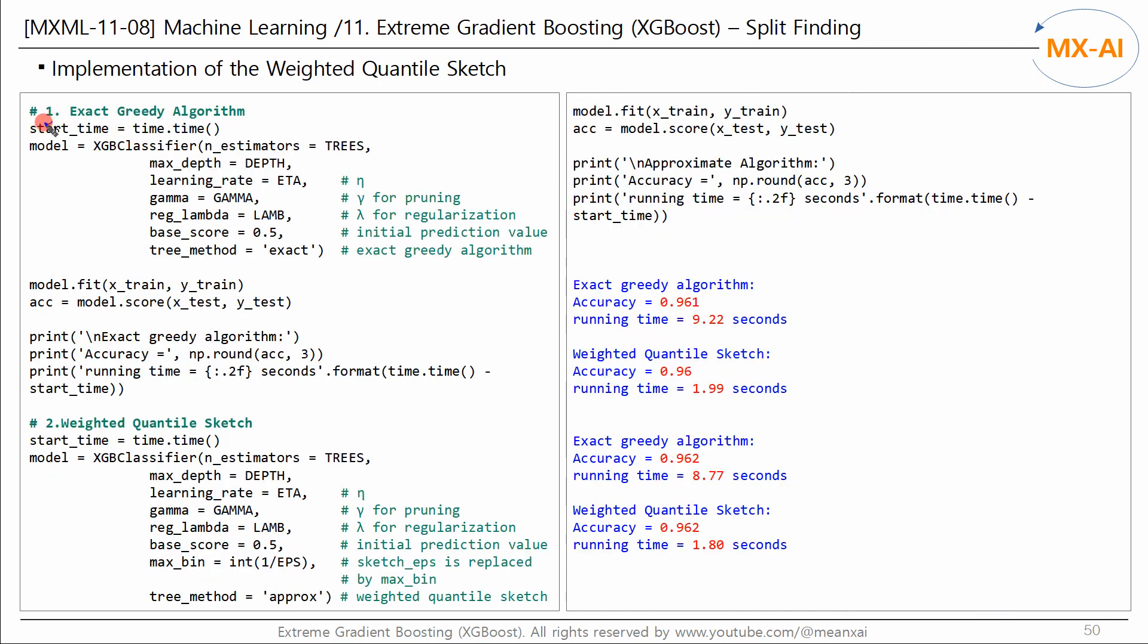Let's first perform the classification using the exact greedy algorithm. Create a model using the XGBClassifier. Set the basic parameters and set the tree_method to exact. We fit this model to the training data and measure the accuracy by predicting the class of the test data. And we check the accuracy and the process execution time.